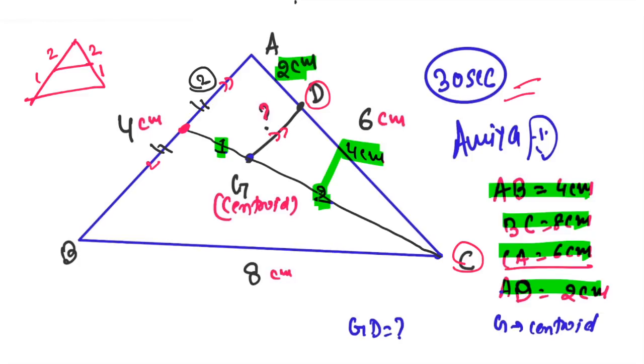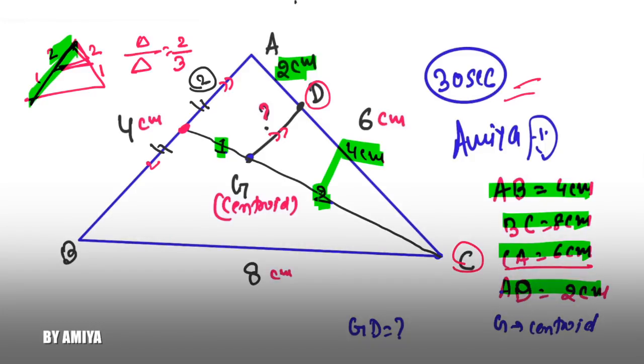It means 2 and 1. You know that the median divides and smaller triangle and similar. I can also have the small triangle to bigger triangle. Two is to three.